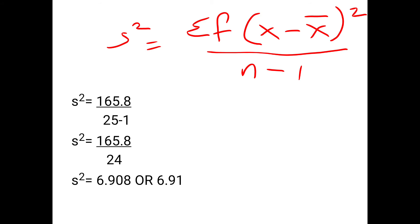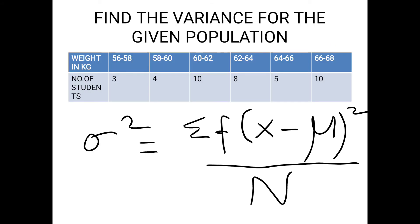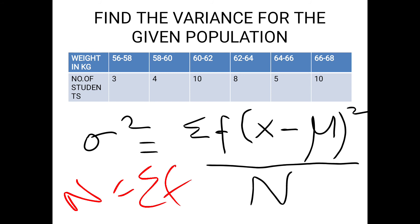Next we will see the example for population variance. Find the variance for the given population data — weight in kg and number of students: 56–58 kg: 3; 58–60 kg: 4; 60–62 kg: 10; 62–64 kg: 8; 64–66 kg: 5; 66–68 kg: 10. The population variance sigma square equals summation of f(x minus mu) whole square divided by capital N, where capital N equals sigma f.